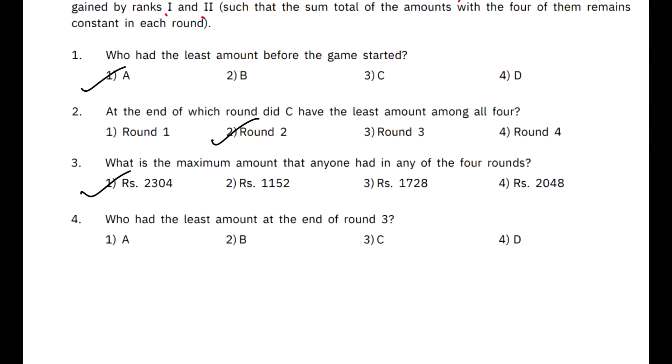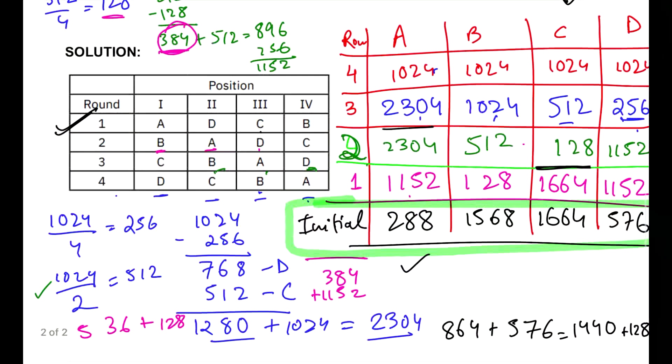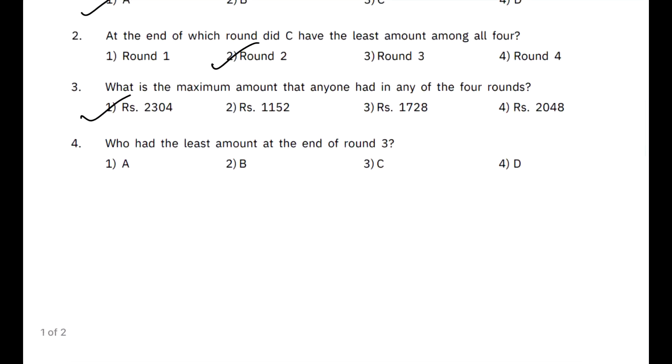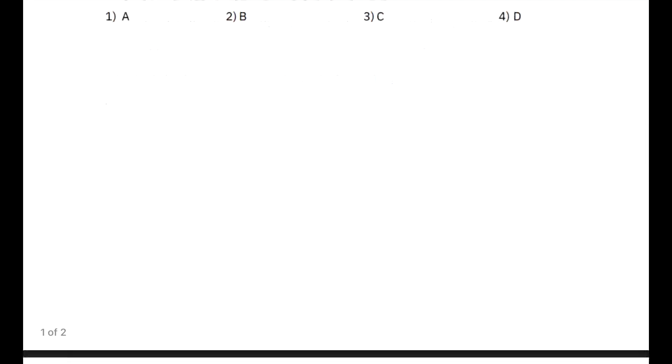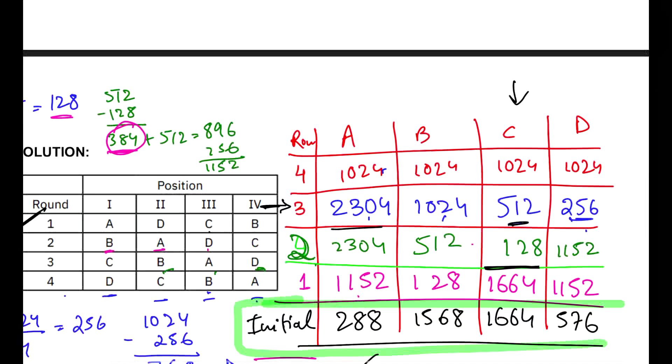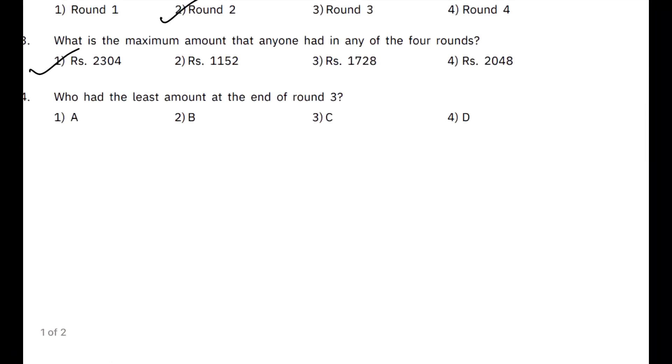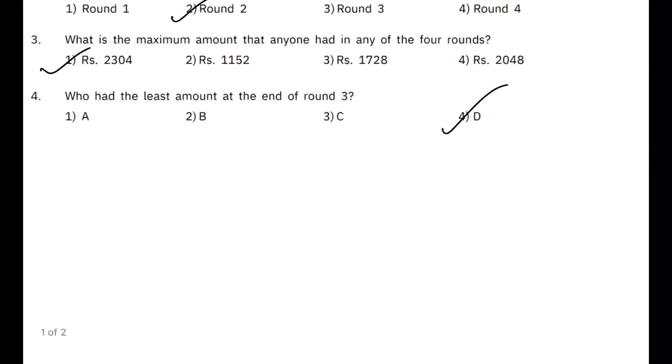Who had the least amount at the end of round 3? So, check this horizontally, round 3 ke end pe C ke paas sab se kam value tha 512. So, the answer of this question is, oh oh, hold on, hold on. I think I just did not see the table correct. So, dekho, yeh galti aap se bhi ho sakti hai. So, you have to see the table correctly. 256 is the least value guys. So, option D will be the right answer.